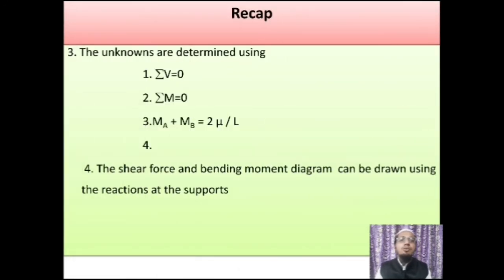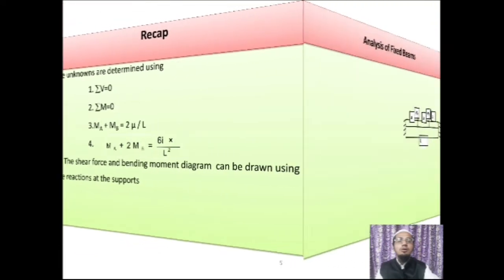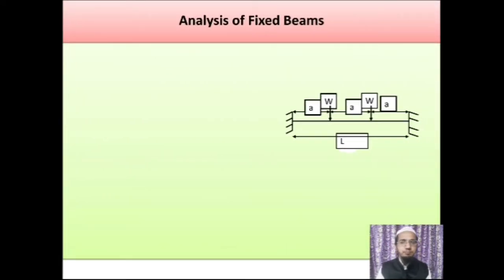To find these four unknowns, we obtained four equations. From those four, two equations are basic static equilibrium equations — summation of vertical forces equals 0, summation of moments equals 0. We obtained two more equations by analysis based on the deflection criteria, that is MA plus MB equals twice of x-bar divided by L squared. Using these equations, we are now well-acquainted with the calculation of the unknowns, and we discussed shear force and bending moment diagram construction using the support reactions.